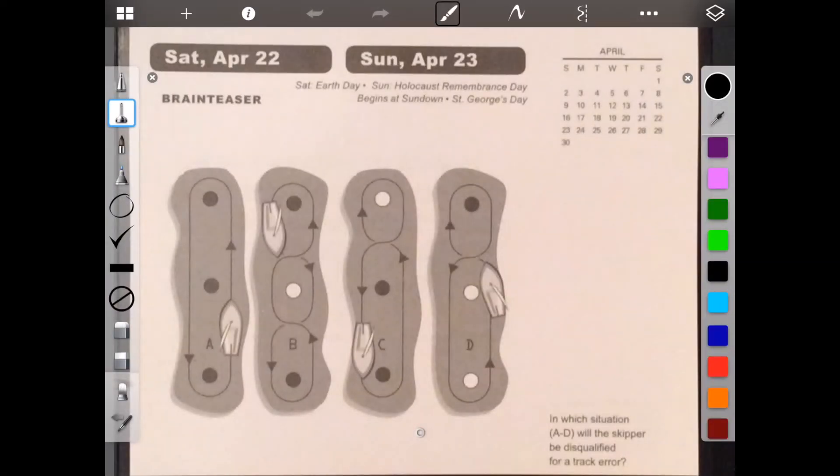Hello. Welcome to Brain Games Calendar 2017. This is week 16, day 6. We have Brain Teaser. In which situation, A through D, will the skipper be disqualified for a track error? Okay. We can't say that it's because they cross over his track, because they all cross over their track. But, and the dots, I think, mean cross. So, the color of the dot means to cross.